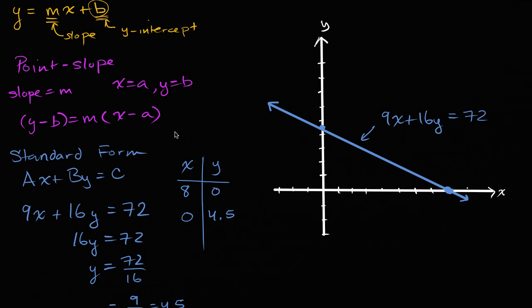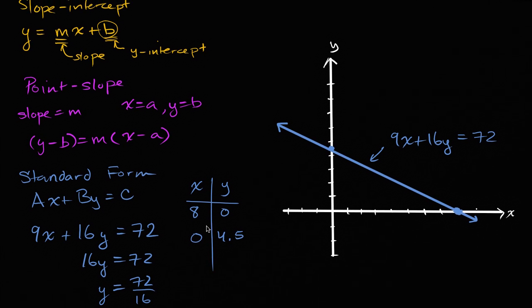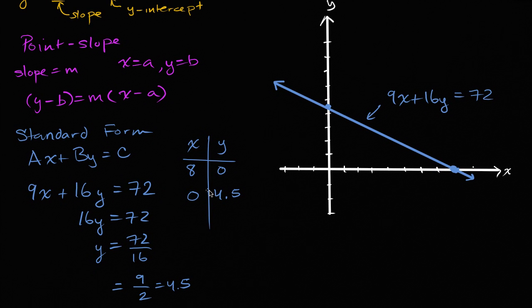Now, I mentioned standard form's good at certain things. And the good thing that standard form is, where it's maybe somewhat unique relative to the other forms, is it's very easy to figure out the x-intercept. And it wasn't too hard to figure out the y-intercept either.